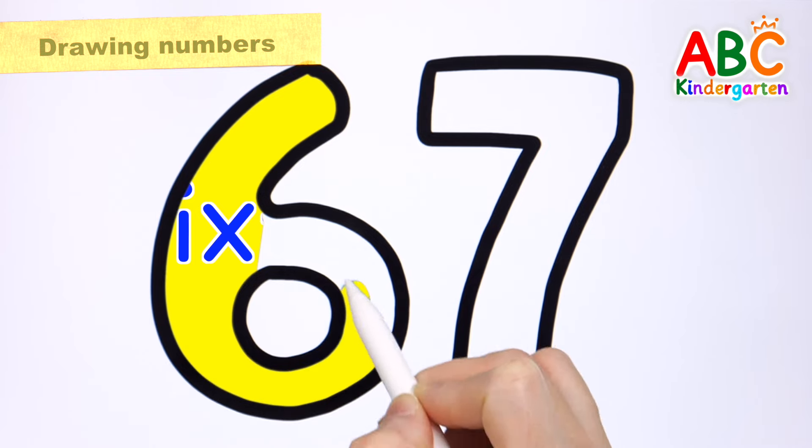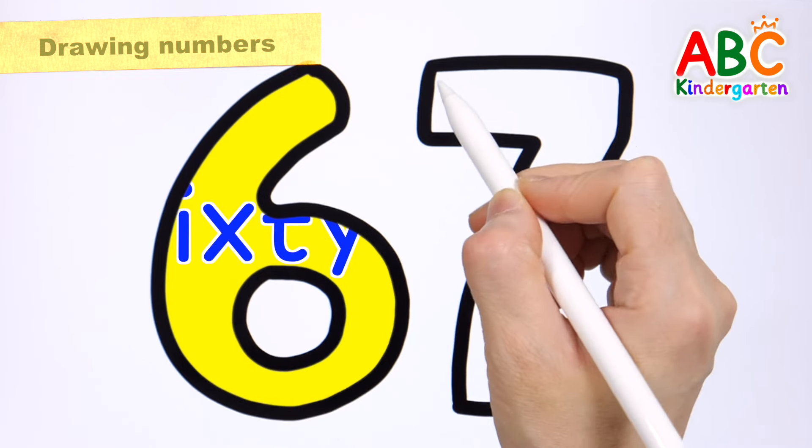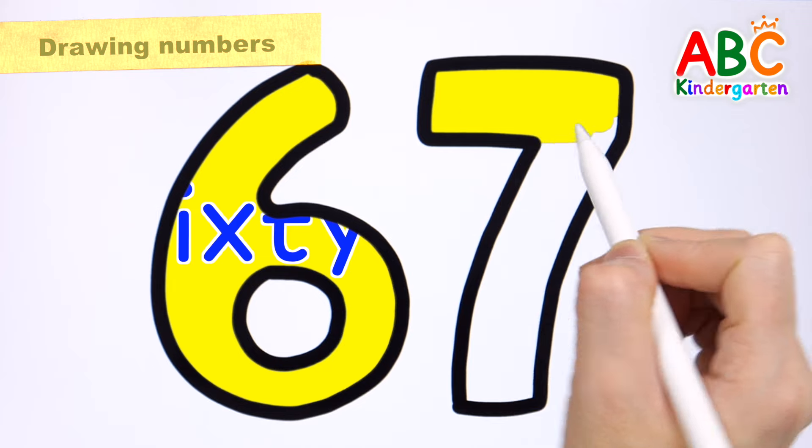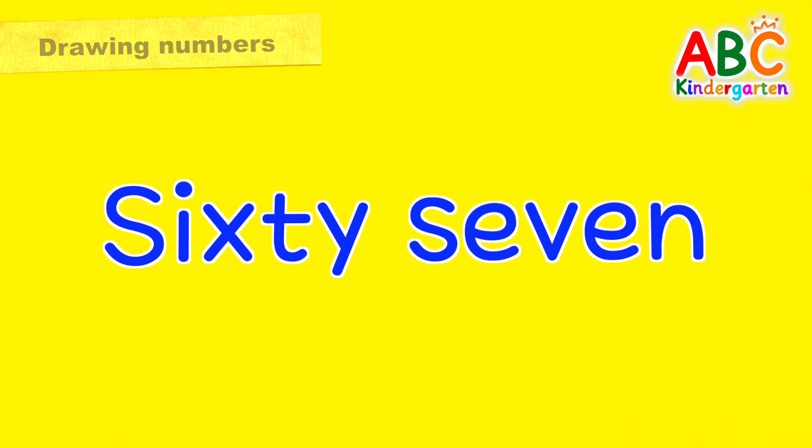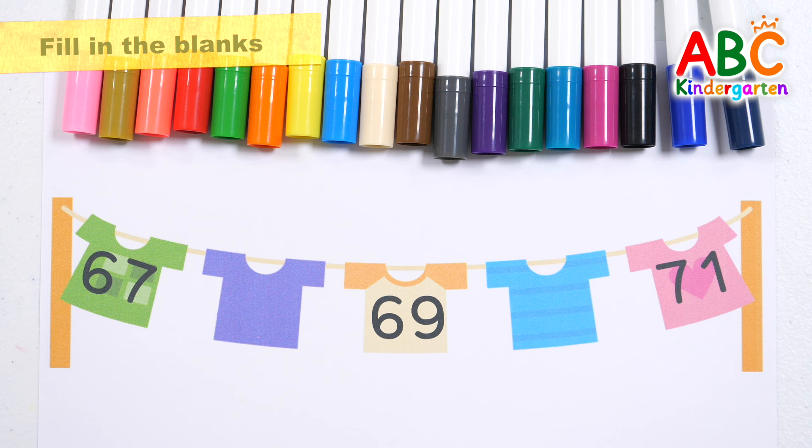This old man, he played two. He played knick-knack on my shoe. With a knick-knack, patty-whack, give a dog a bone. 67. Shall we find the last number and write it down?